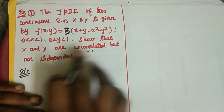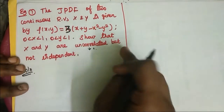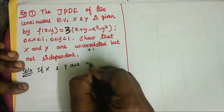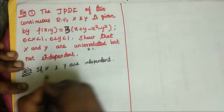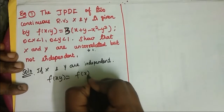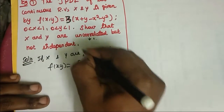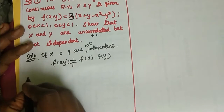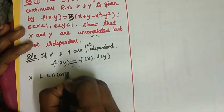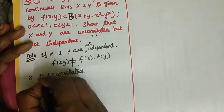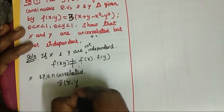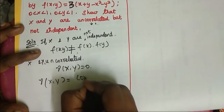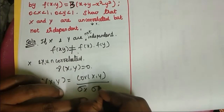To show x and y are uncorrelated, we need to prove the correlation coefficient is 0. For the not independent part, if x and y were independent, the condition f(x, y) = f(x)·f(y) would be satisfied. The correlation coefficient equals covariance of (x, y) divided by the square root of variance of x times variance of y.